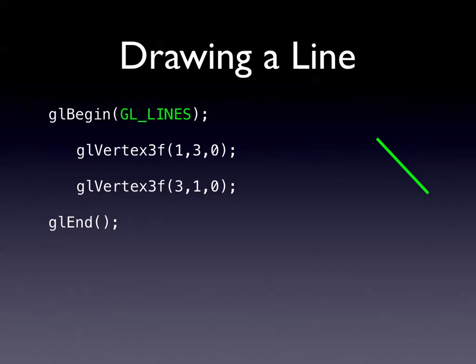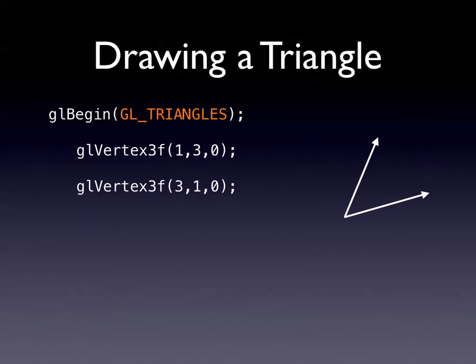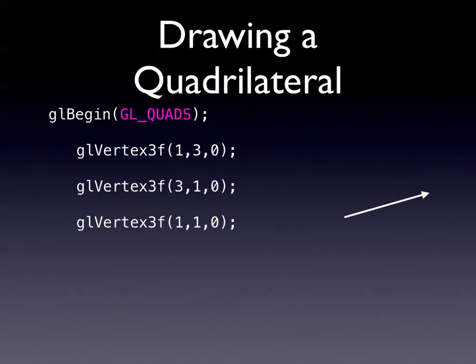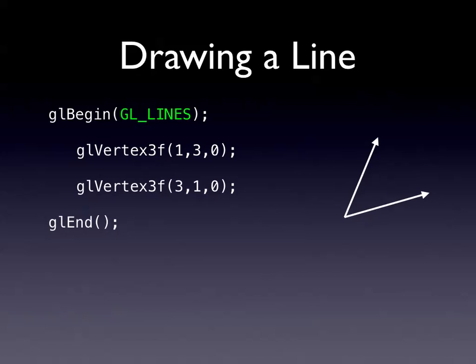OpenGL is a heavily state-based system - internally it says 'I'm rendering something now,' and when you start putting vertices in, it sends those vertices to your GPU to be drawn. The next primitive is the triangle. We've got our previous two vertices and then we add another one - this time instead of GL_LINES we have GL_TRIANGLES. GL_End draws our first triangle in 3D.